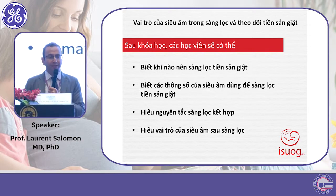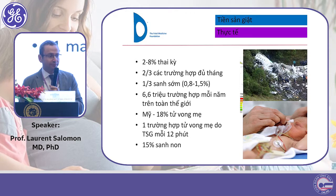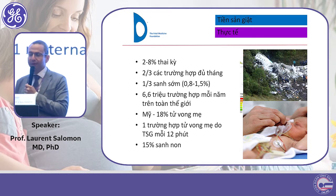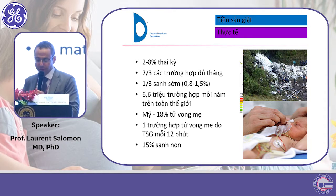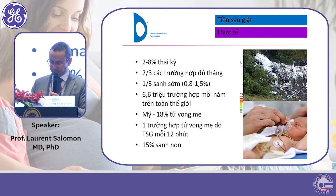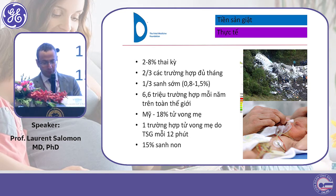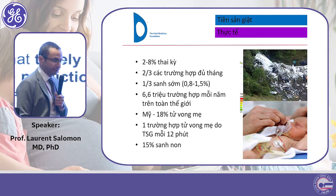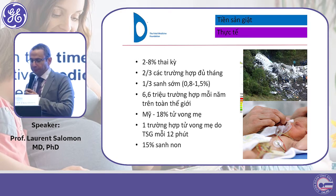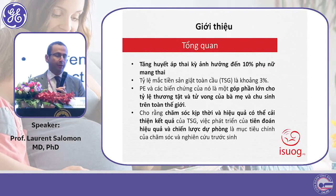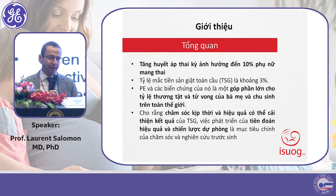Even in the US, preeclampsia is responsible for almost 20% of all maternal deaths. It is believed that throughout the world it is responsible for one maternal death every 12 minutes. It is also responsible for 15% of all preterm deliveries. So basically it is a big problem and we should try to predict and prevent it.